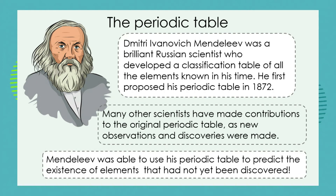So a periodic table is simply a classification system for the different elements that we know. Who started with this idea of let's make an element table? Well, Dmitry Ivanovich Mendeleev was a brilliant Russian scientist who developed the first classification table of all the elements that were known in his time. He first proposed his periodic table in 1872, so that's a long time ago. Not all the elements had been discovered at that time, but Mendeleev's system didn't depend on things that we don't know — it depended on things that scientists knew at that time.